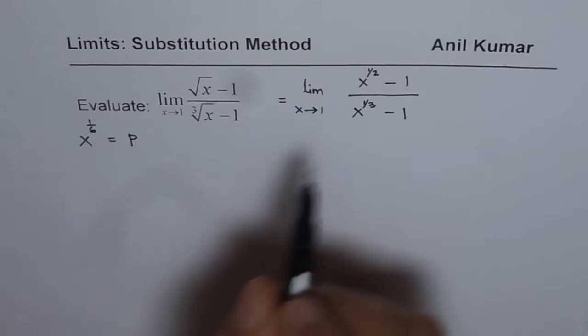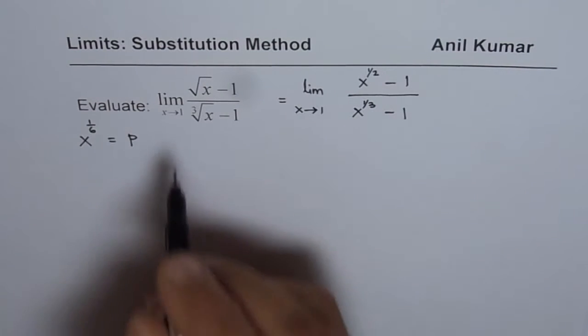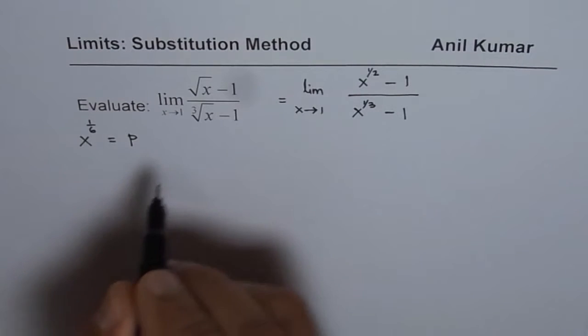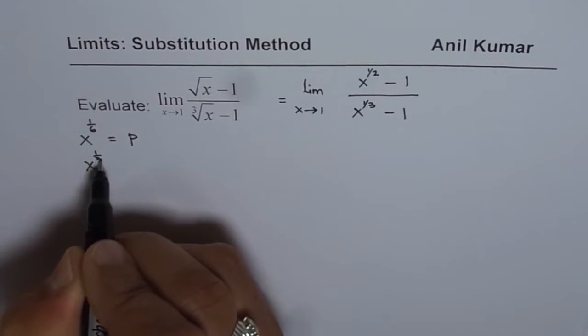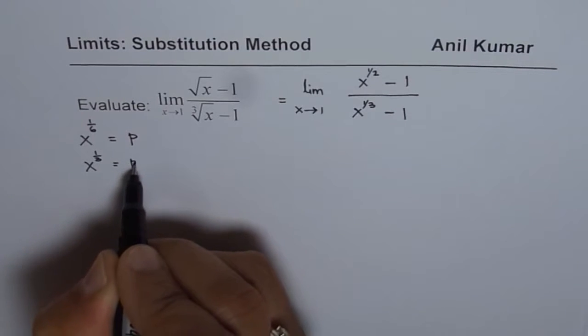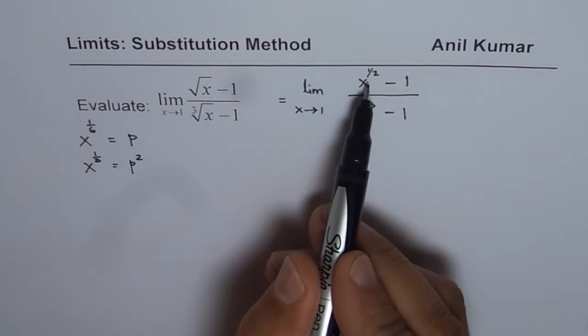Now in that case, what will be the third root? That will be square of this, right? So in that case, x to the power of 1 over 3 is going to be p square. You understand?